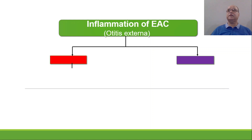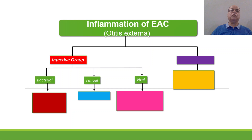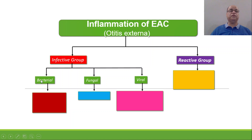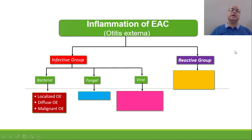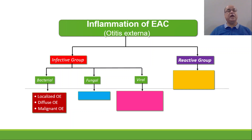The inflammatory conditions affecting the external auditory canal are broadly divided into two groups: one is the infective group and the other is the reactive group. The infective group is divided into subtypes according to the microorganisms causing these diseases. If it is a bacterial infection, we call it bacterial otitis externa. This may be well localized, which we know as furunculosis or boil of the external auditory canal, or it may involve the whole external auditory canal, which we call diffuse otitis externa. If it is a Pseudomonal infection, we call it malignant otitis externa. Fungal infections are labelled as otomycosis.